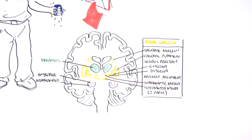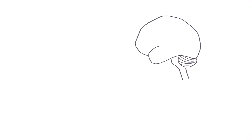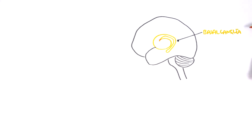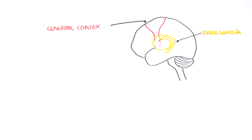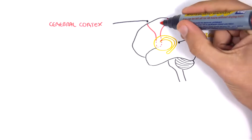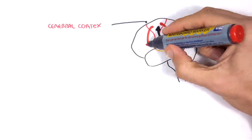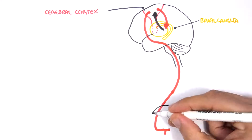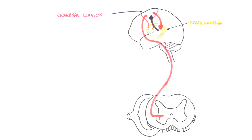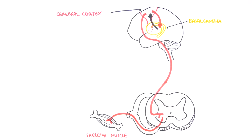We will mainly focus on the basal ganglia, which is disrupted in Parkinson's disease. When the cortex wants to initiate a movement, it sends signals first to the basal ganglia. The basal ganglia sends signals back to the cortex, particularly the motor cortex. The motor cortex then initiates those signals, sends them down the spinal cord, out through the ventral horn to the skeletal muscle, to initiate a smooth controlled movement.